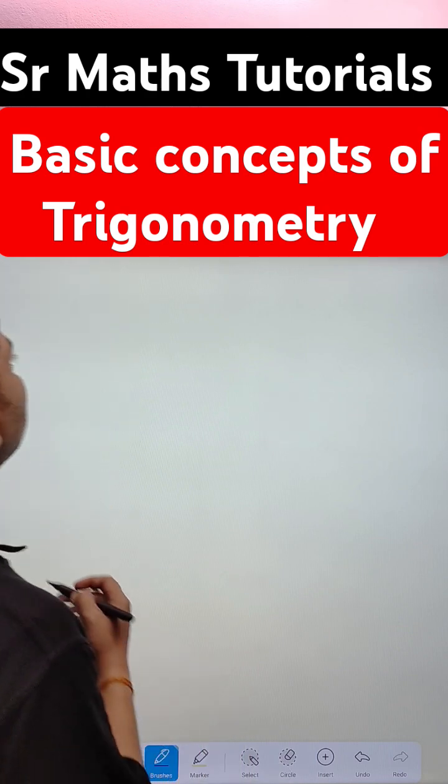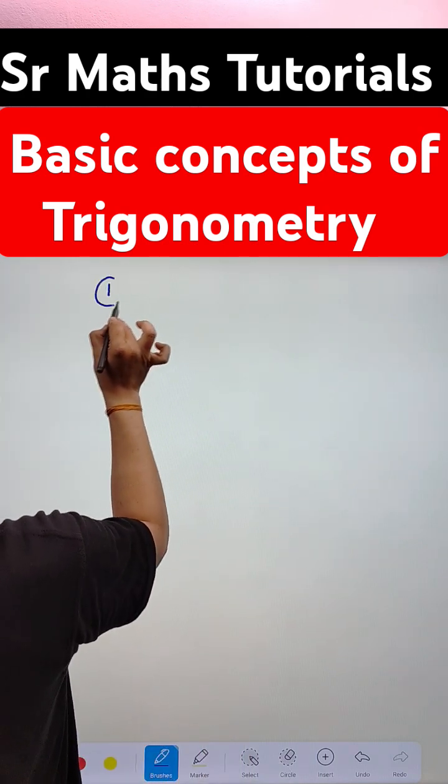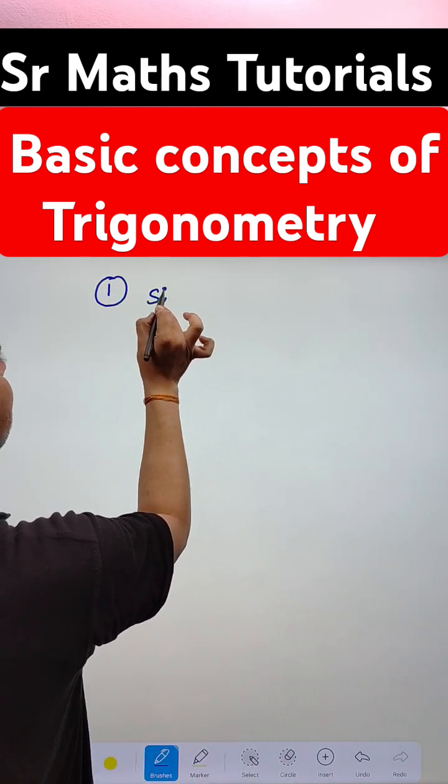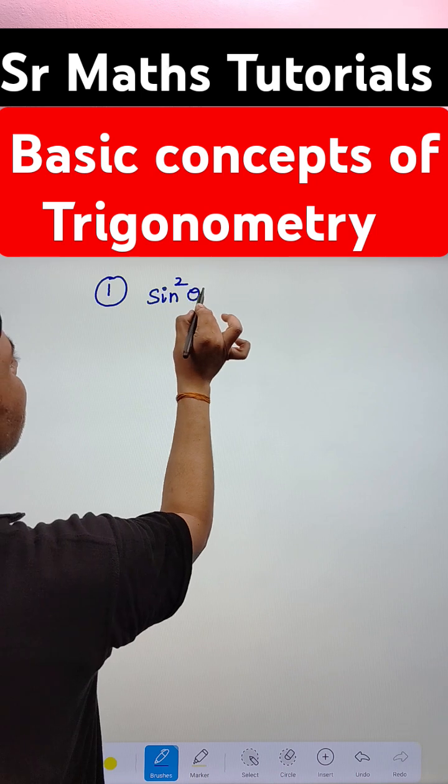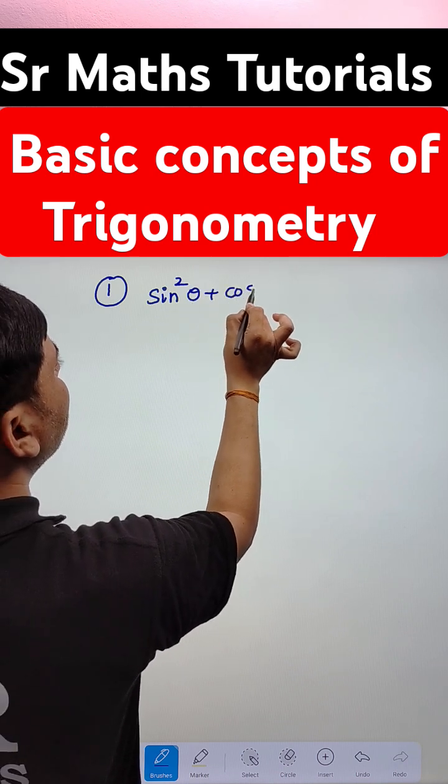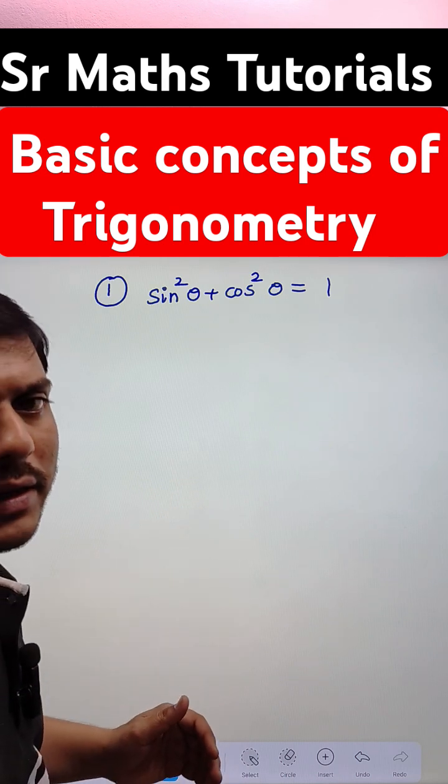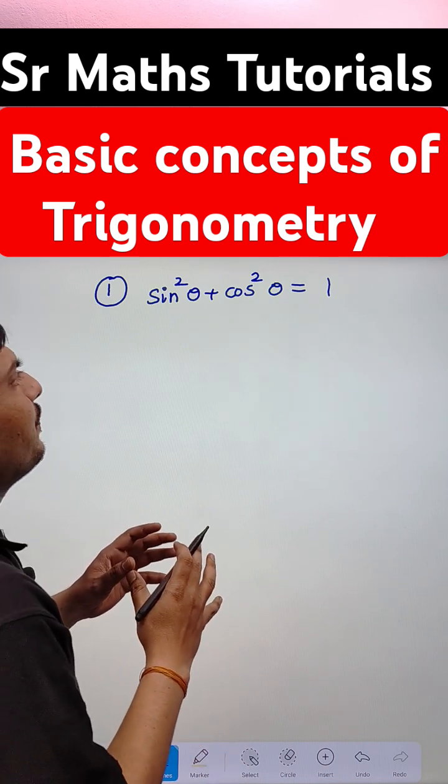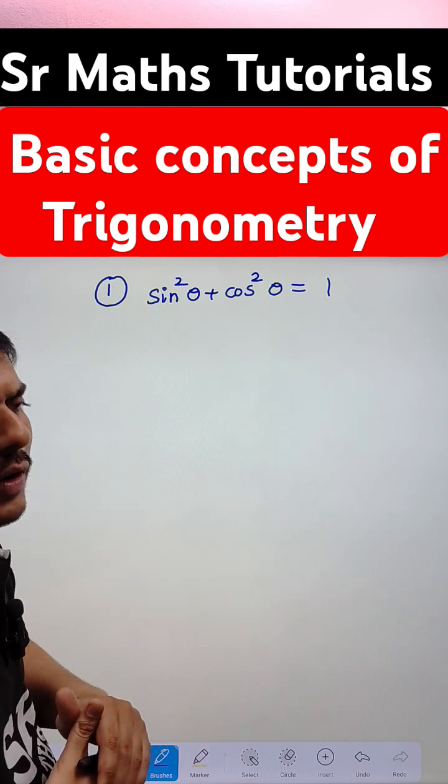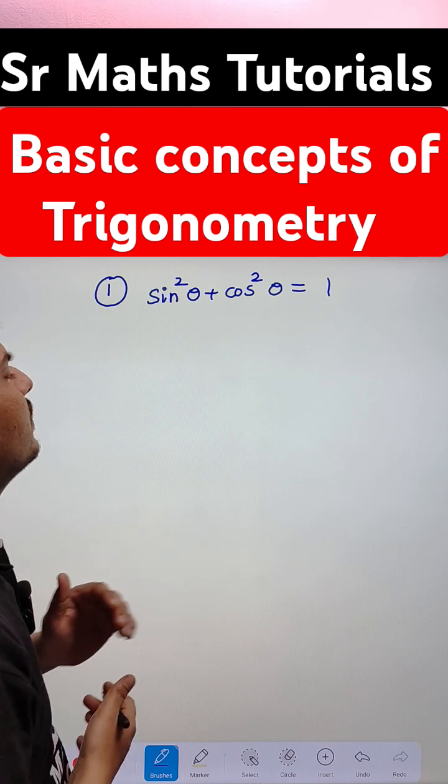The first identity is sine square theta plus cos square theta is equal to always 1. How is this possible? I will explain the solution or proof in this case.